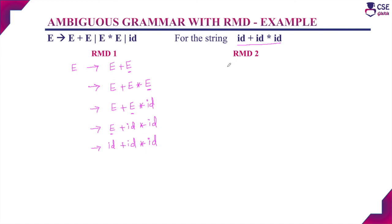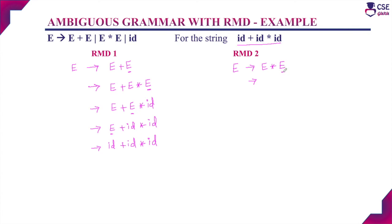For the second rightmost derivation, apply the production rule E → E * E. Choose the rightmost non-terminal and apply E → id. Only one non-terminal remains; apply E → E + E.